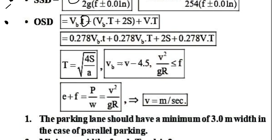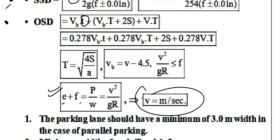Next is the centrifugal ratio formula. The centrifugal ratio P/W equals E + F (super elevation plus friction), which equals V²/GR. Here V is in meters per second. This expression is directly asked as a formula-based question in exams.